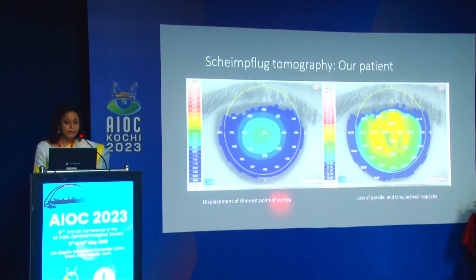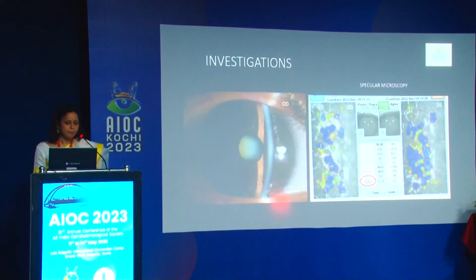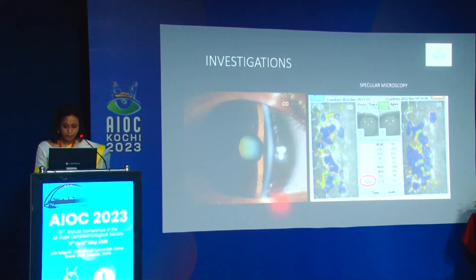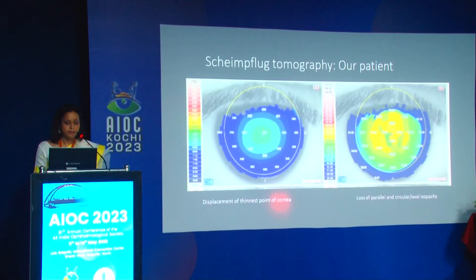In our patient, we noted displacement of the thinnest point of the cornea and loss of parallel or circular/oval isopachs. There was mild central corneal thickening, suggesting some subclinical edema. Specular microscopy did not yield cell counts — only some images. Pachymetry was 525 microns in one area and around 557 microns in another.